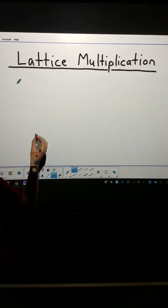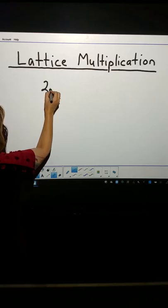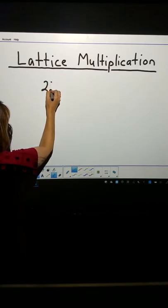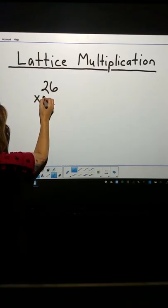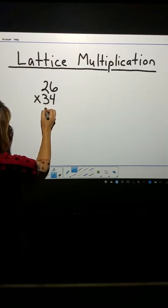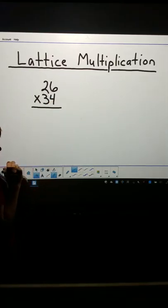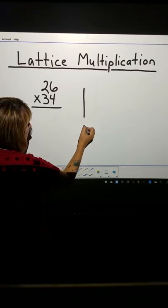Let's say we want to find out what the product is to 26 times 34. Well, we have a top number 26 and a bottom number 34. So, for the grid, we have to start with a rectangle.